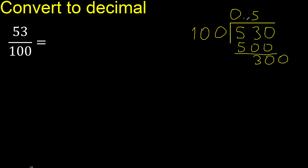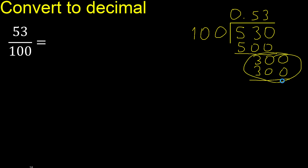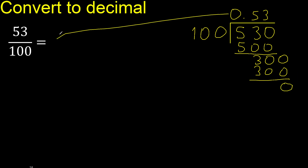The point is here. Now 300. 100 multiplied by which number? 100 multiplied by 4 is 400, which is greater. Multiplied by 3 is 300, which is not greater. Subtract: 0 remaining. Therefore finish.